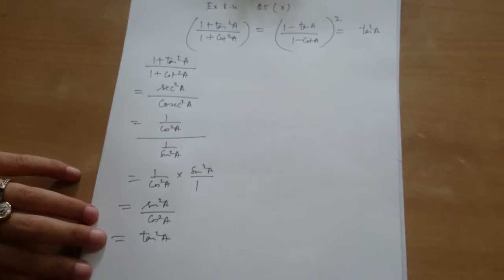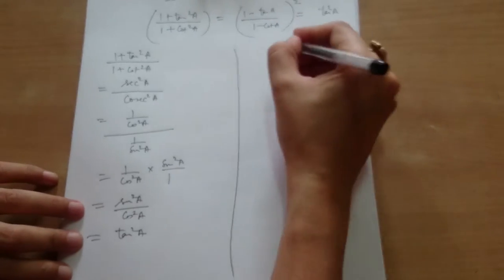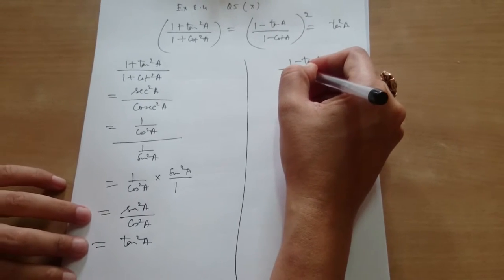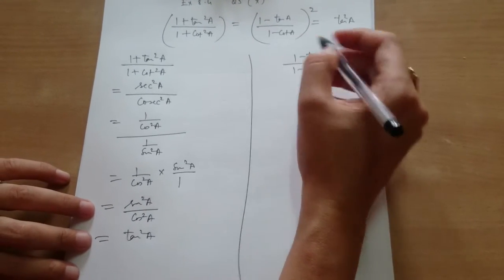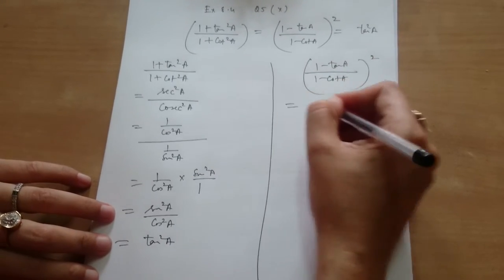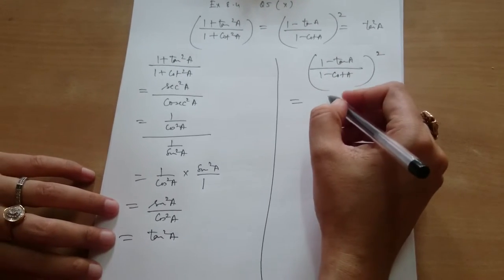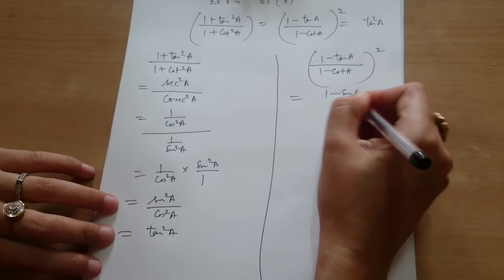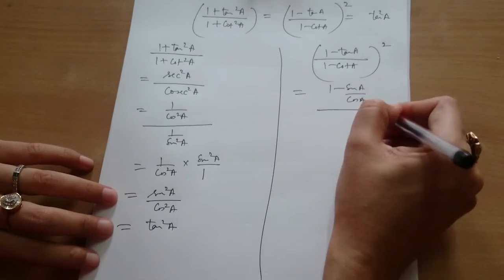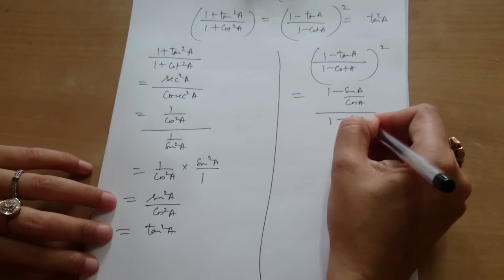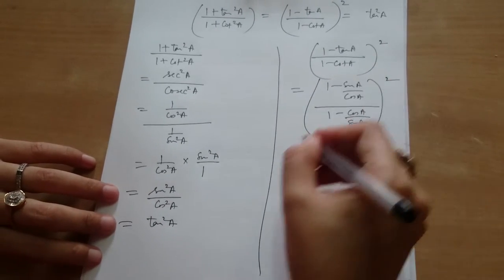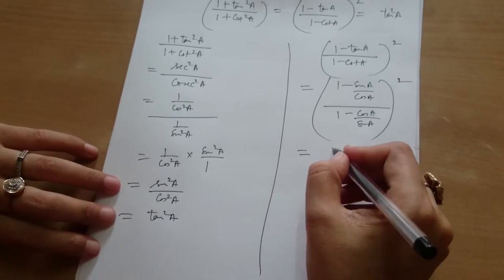Now we will take (1 - tanA) divided by (1 - cotA), whole square. This is equal to (1 - sinA/cosA) divided by (1 - cosA/sinA), whole square.